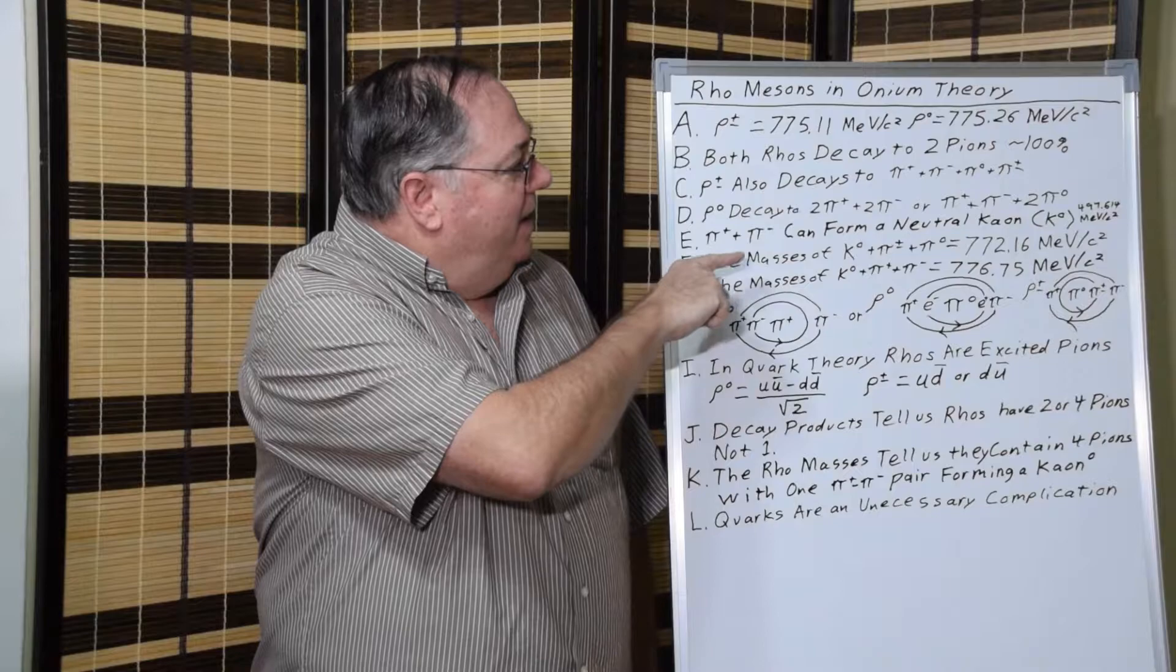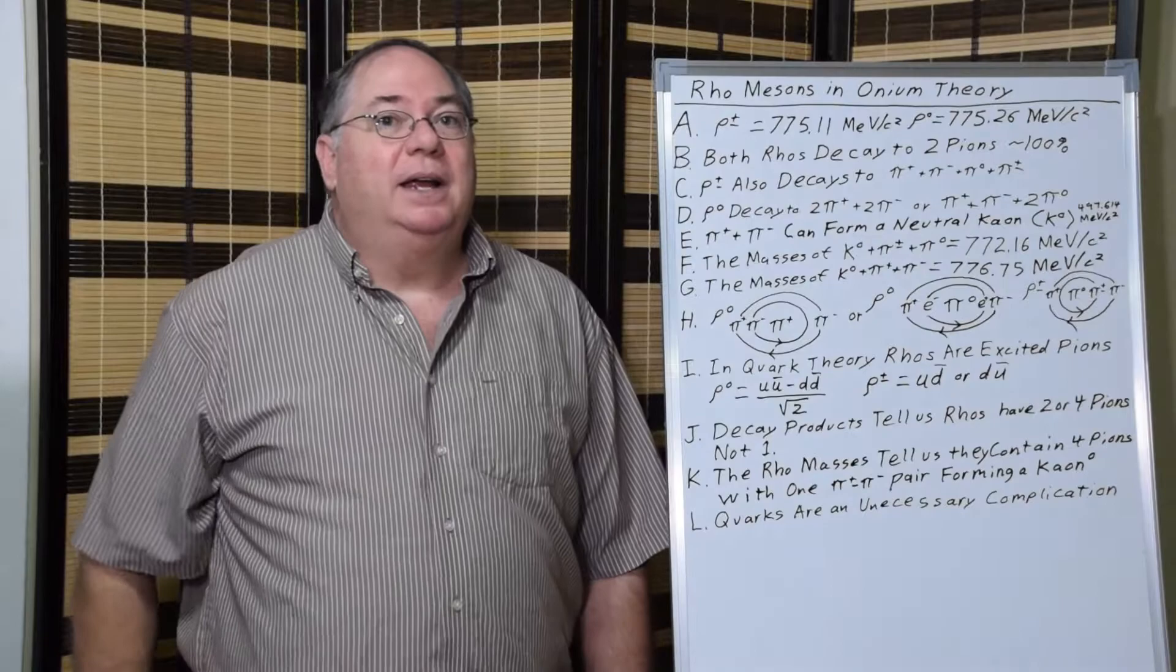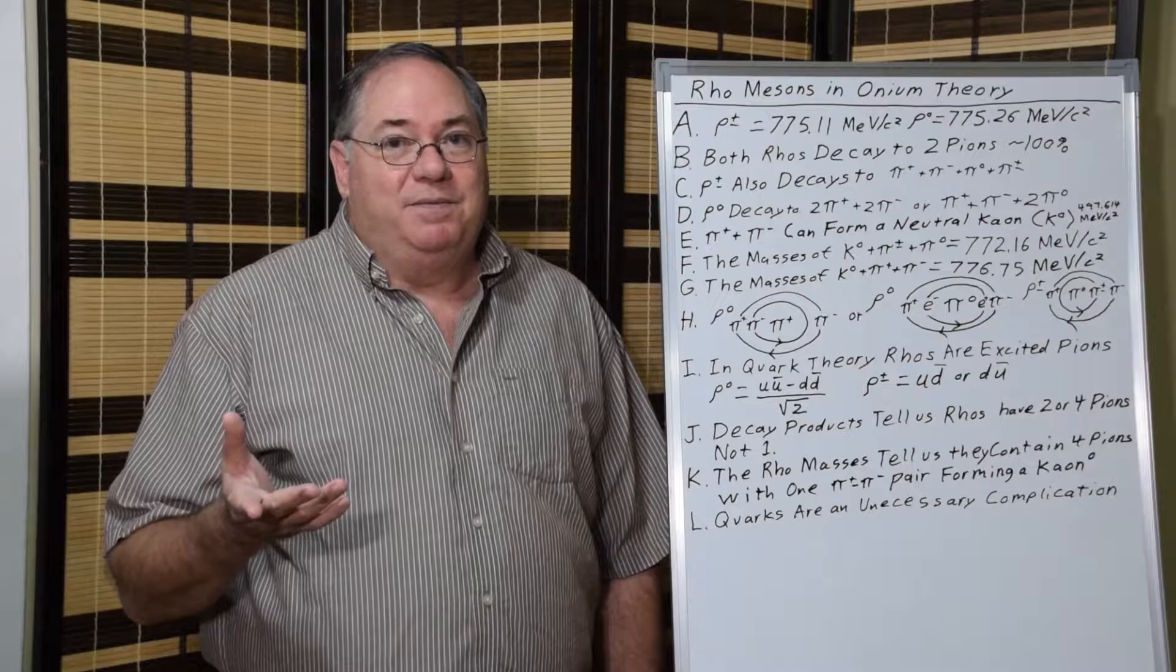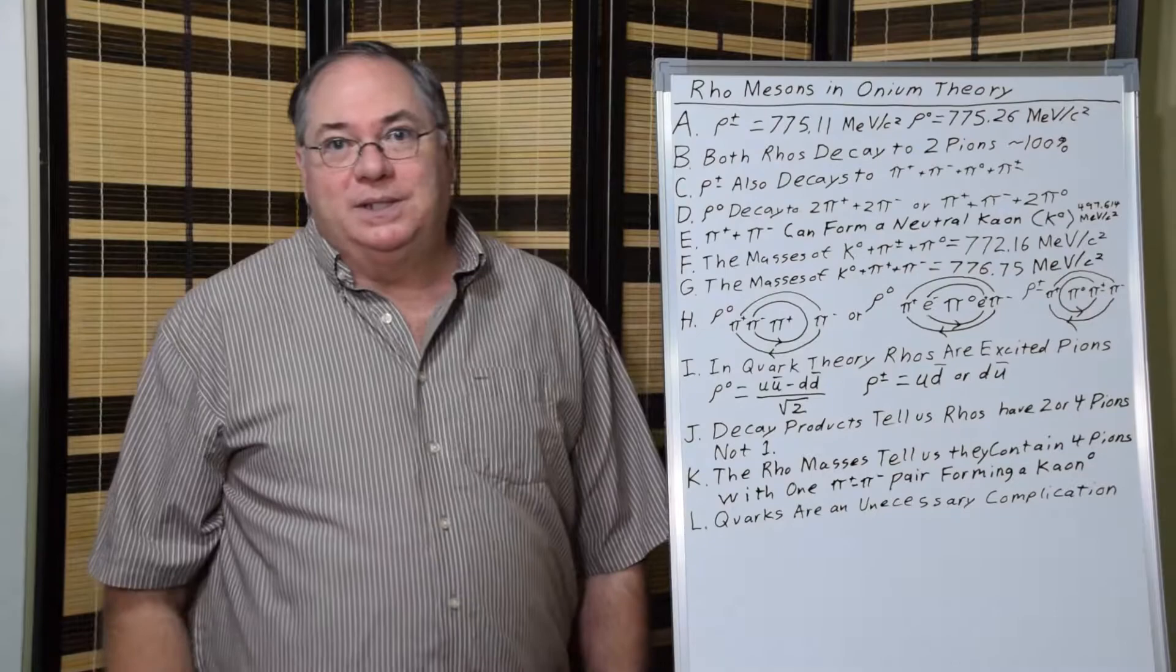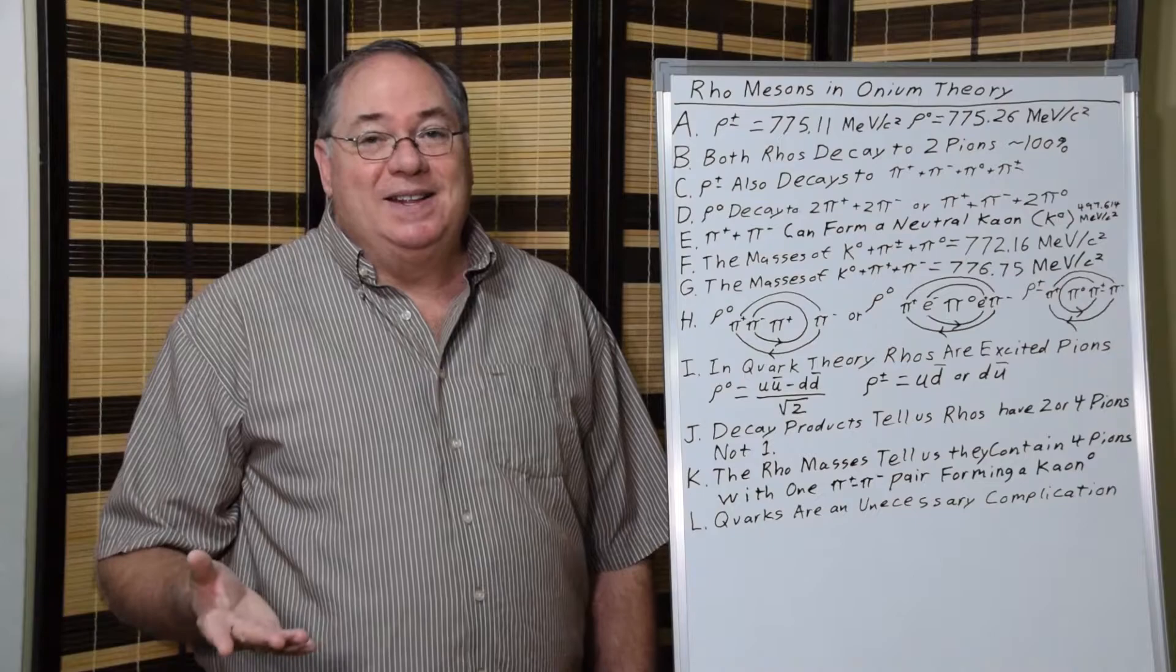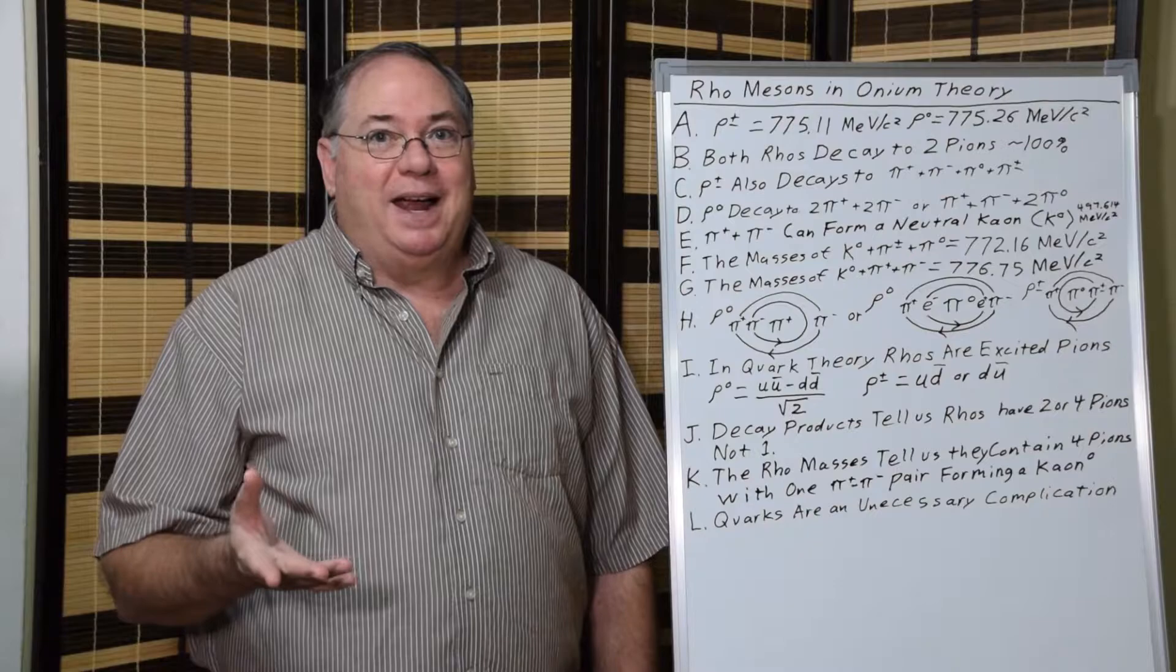We can add up the masses of a neutral kaon, a charged pion, and a neutral pion to estimate the mass of a charged rho meson. That gives us 772.16 MeV/c², which is almost exactly the known mass. We simply do it by adding up the mass of the components.